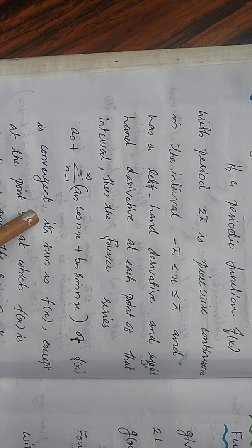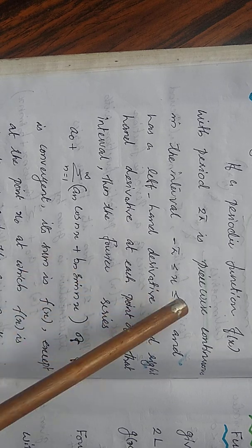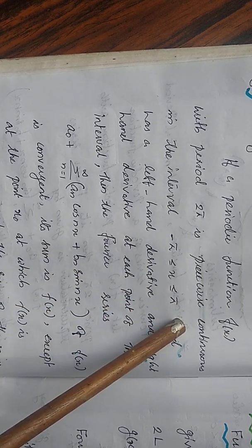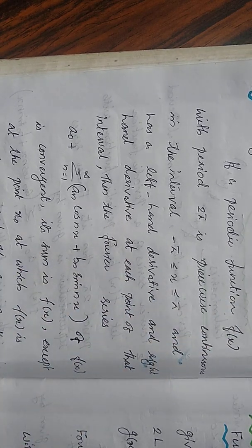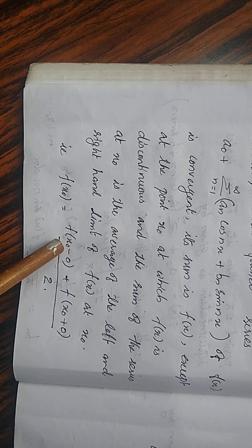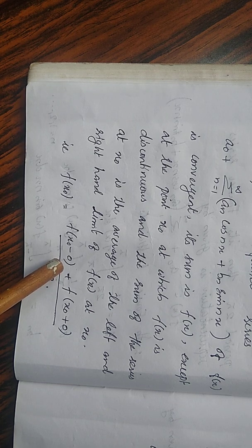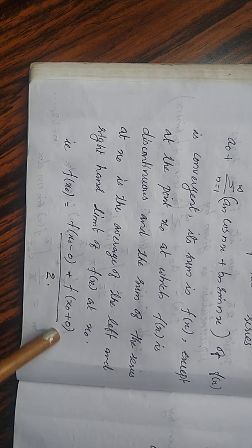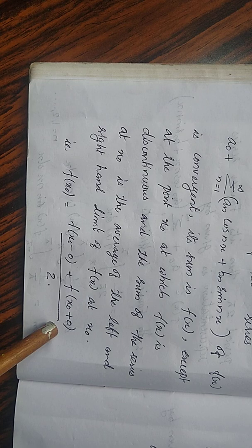Regarding the piecewise continuous condition: at any point x0 where the function is not continuous, we can find its value as the average of the left-hand limit and the right-hand limit. Here x0 minus 0 denotes the left-hand limit and x0 plus 0 denotes the right-hand limit.